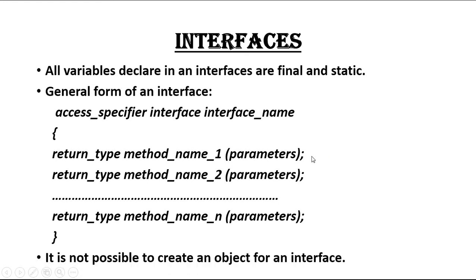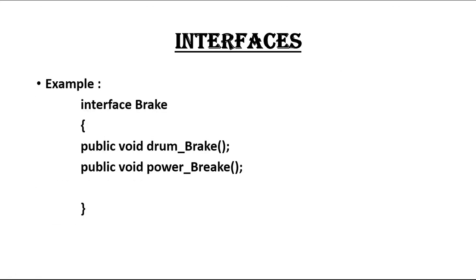It is not possible to create an object for an interface. An interface is similar to a class in Java, but unlike classes, an interface cannot be instantiated. Here is a simple example: I declare an interface named 'Break' that contains two abstract methods — 'drumBreak' and 'powerBreak'. You can see that these two methods do not have any body and end with a semicolon.